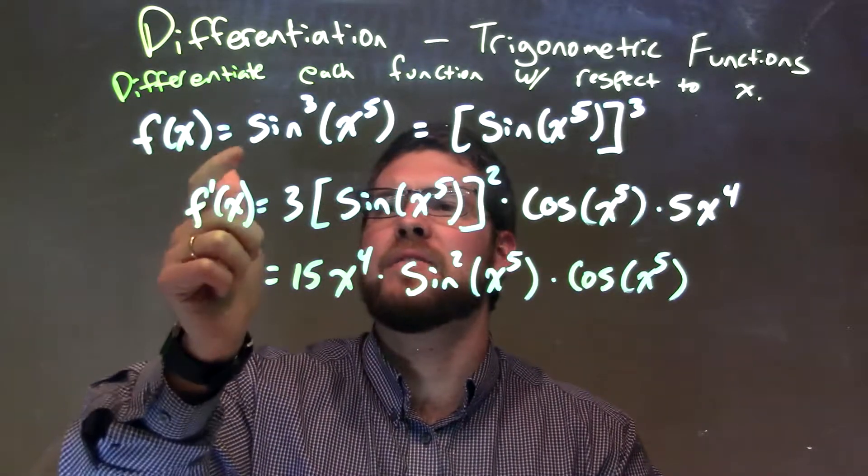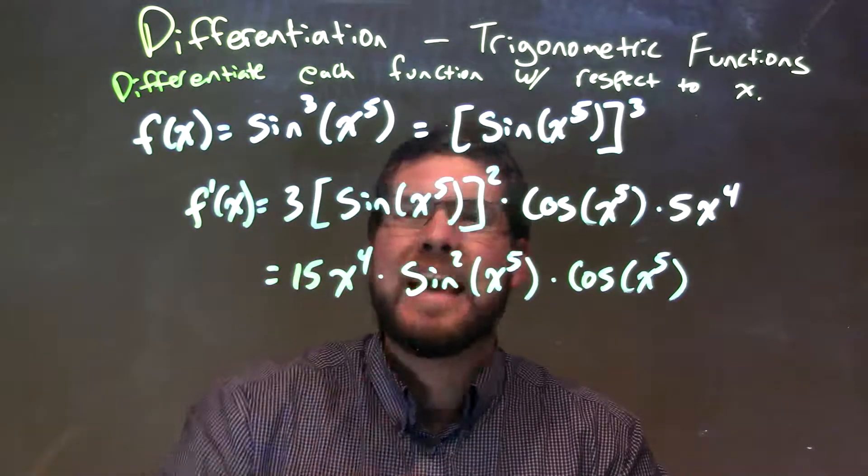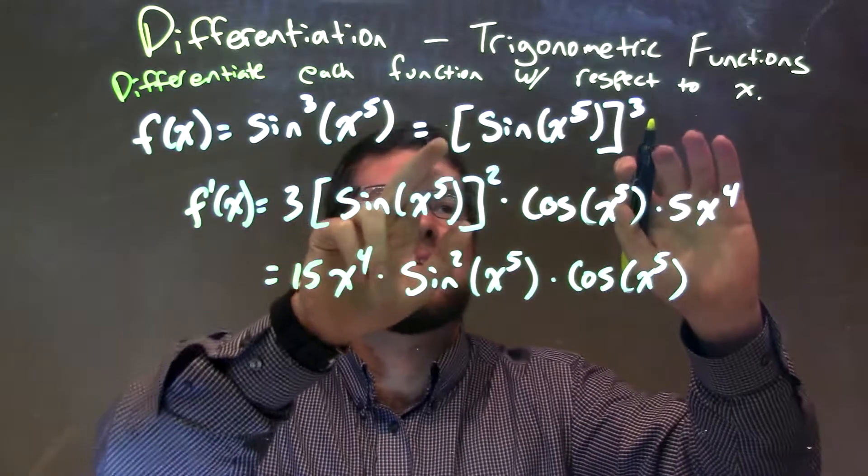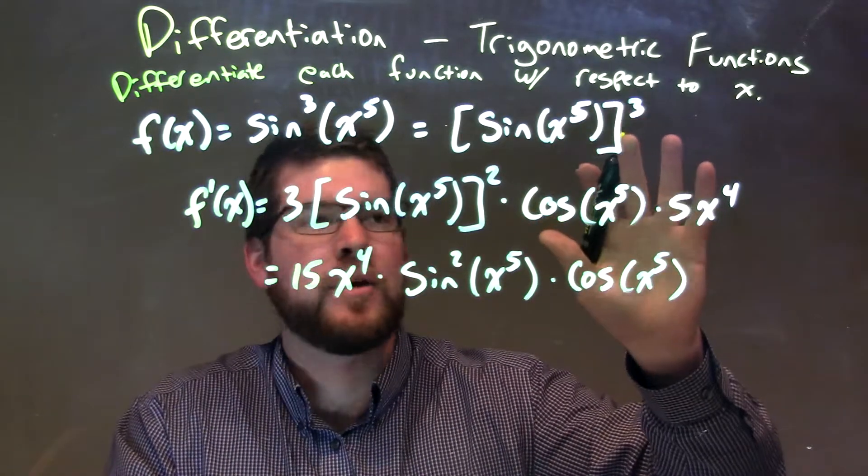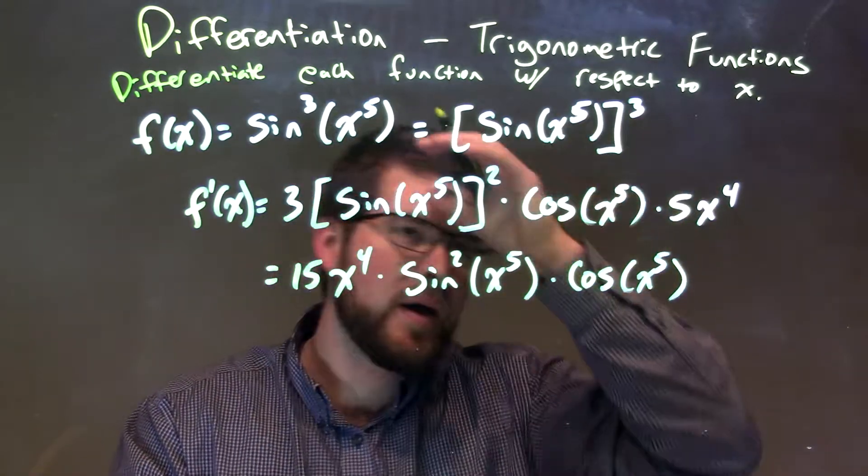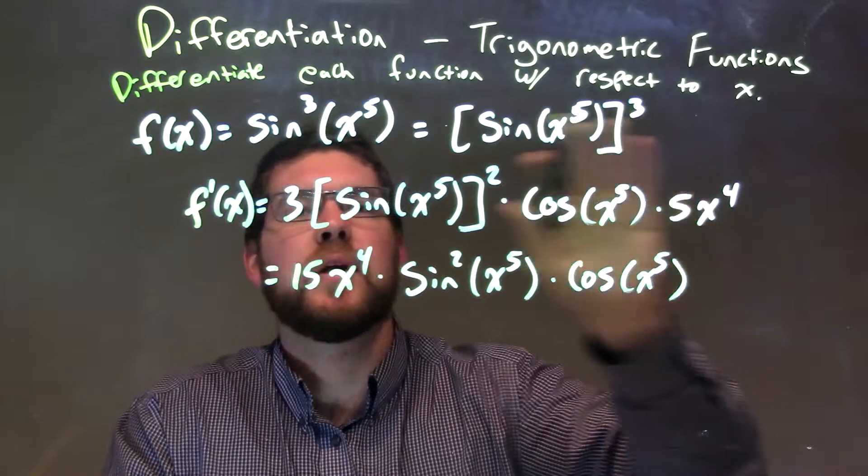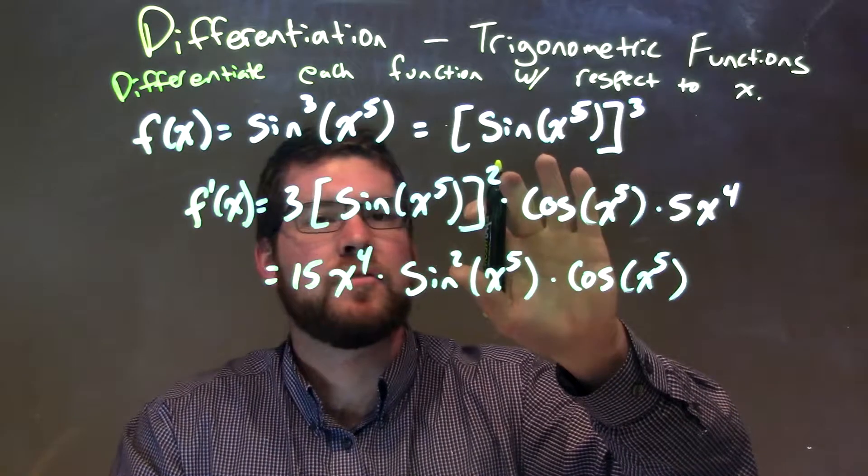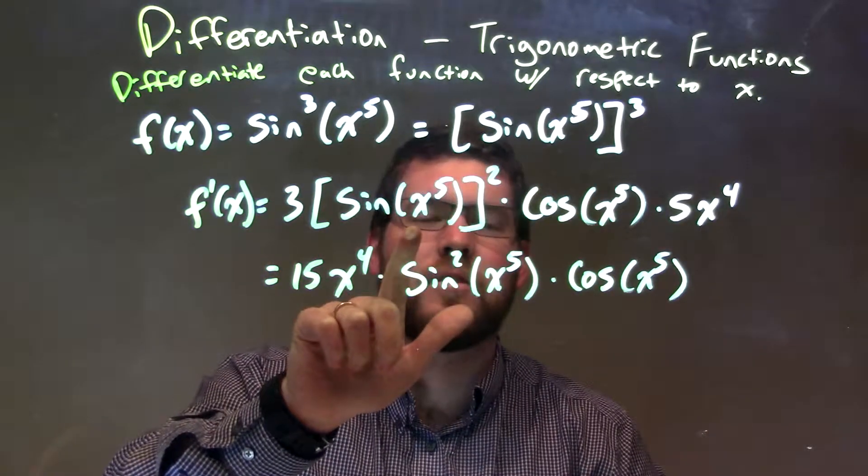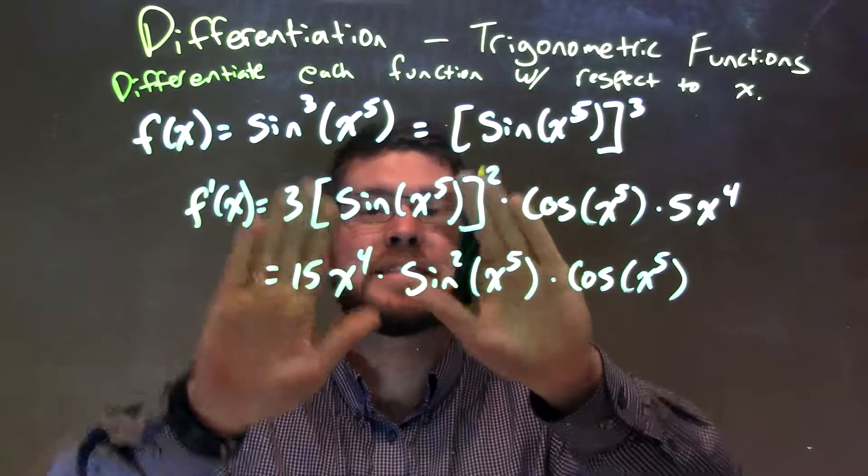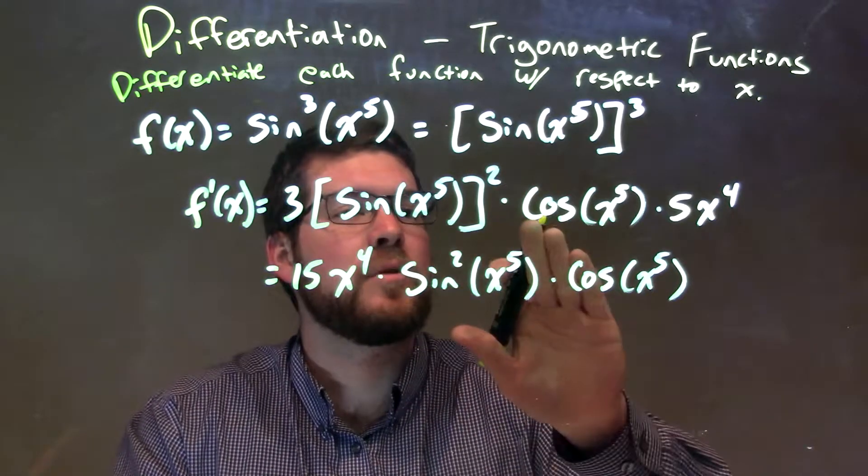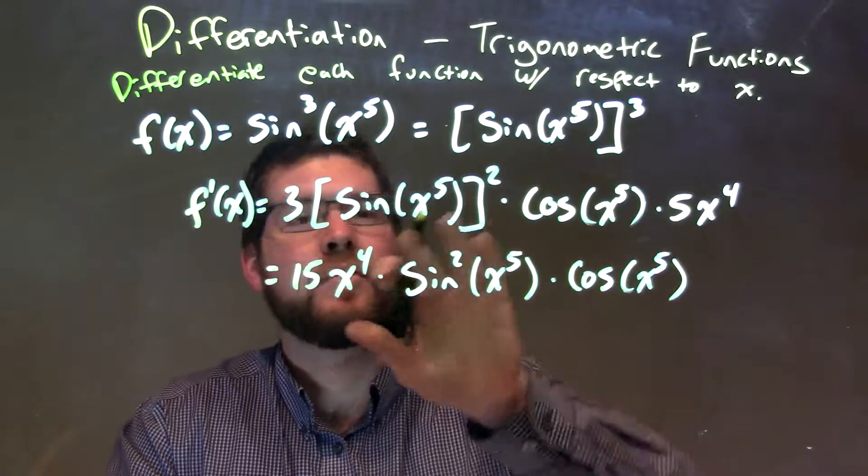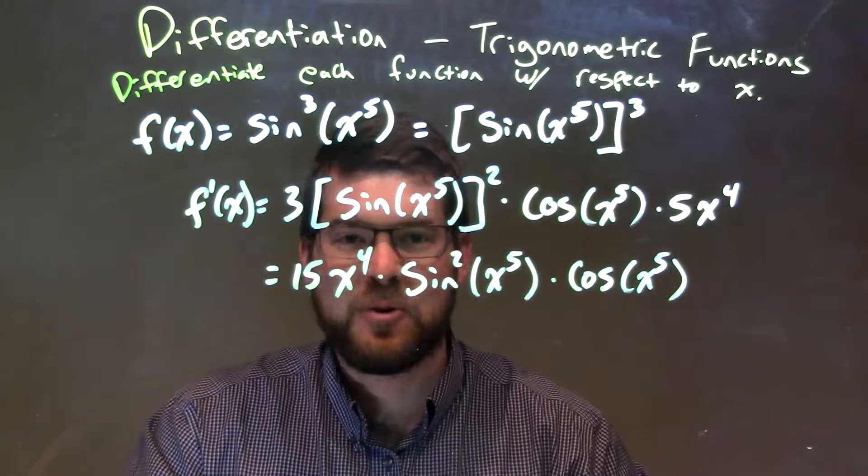For a recap, we're given f(x) is equal to sine to the third power of x to the fifth. But what we know is that that third power can be shown like this on the outside. That really helps us see the chain rule in progress. So the 3 comes down up front using power rule, 3 minus 1 is 2, and then keep the inside the same, sine of x to the fifth power. Then we take the derivative of the inside: derivative of sine is cosine of x to the fifth, times the derivative of x to the fifth, which is 5x to the fourth power.